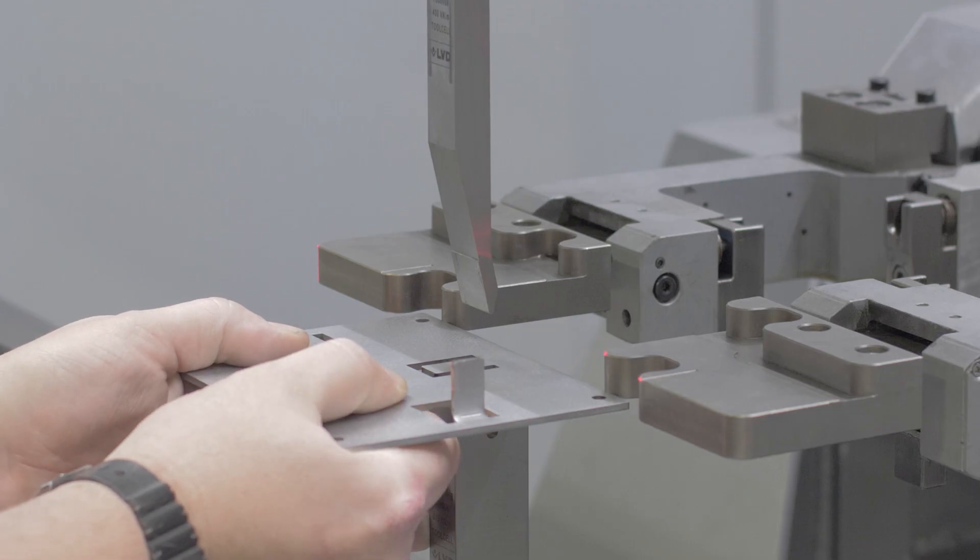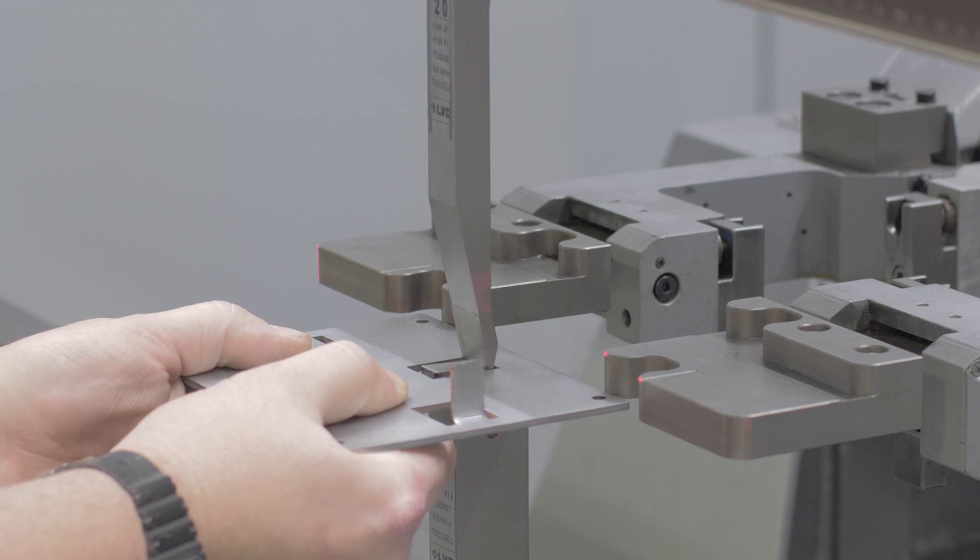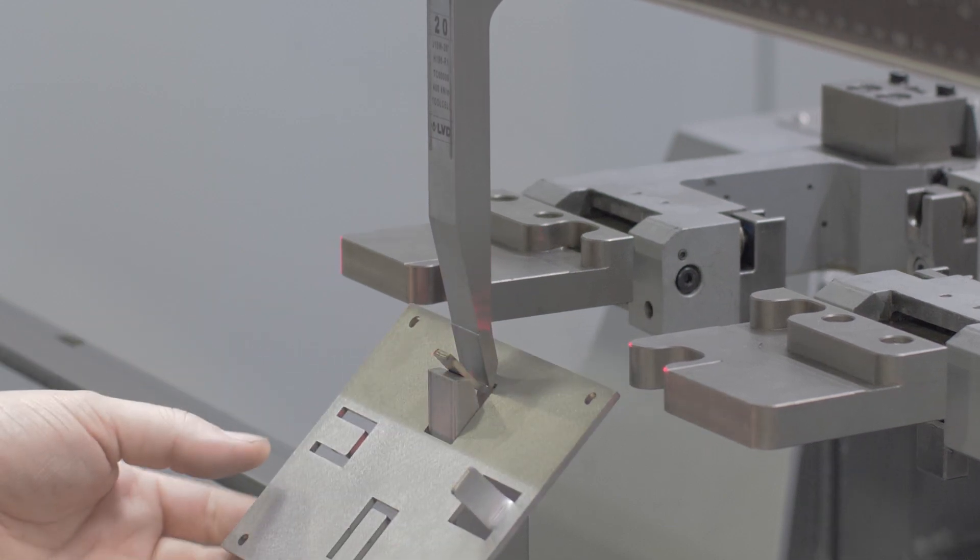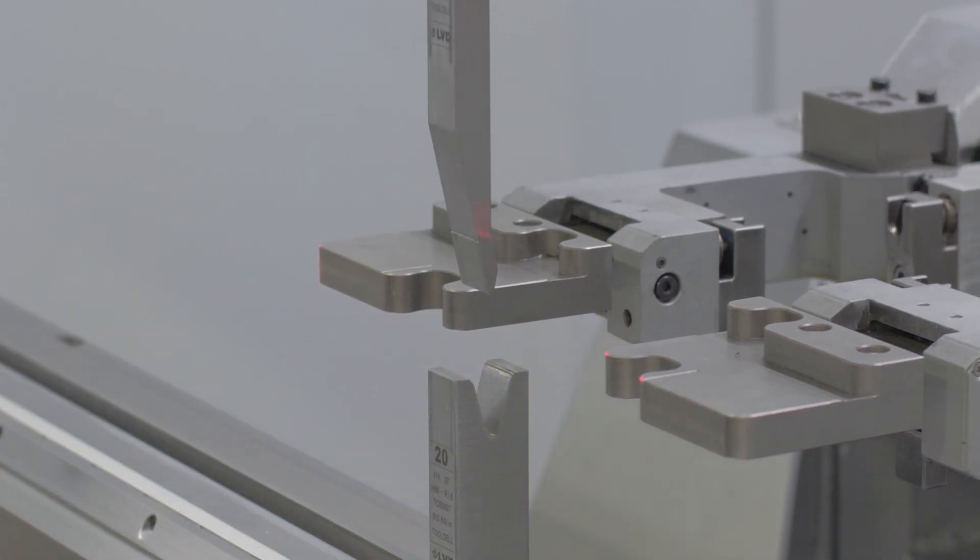Press brakes use a die and a punch, two removable tools of the press brake which control your bend. A die is a V-shaped tool which angles your bend when the punch is pushed downwards onto the part.